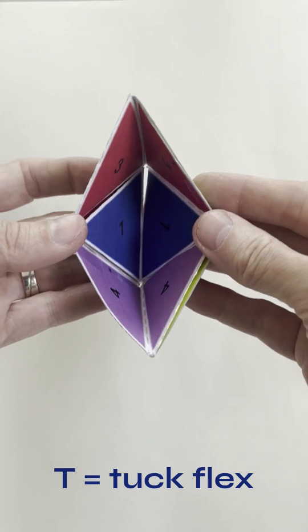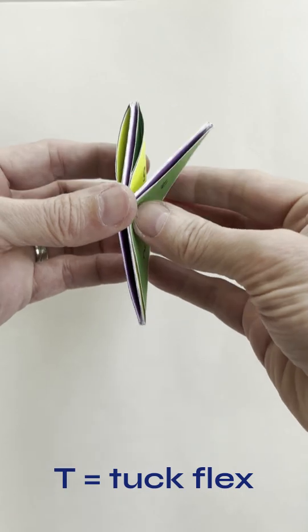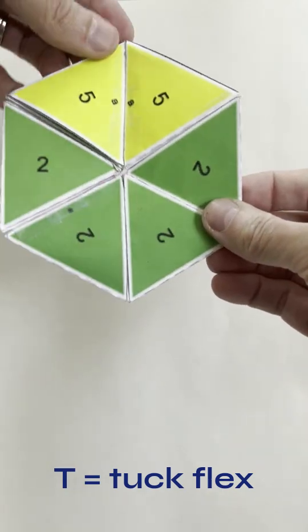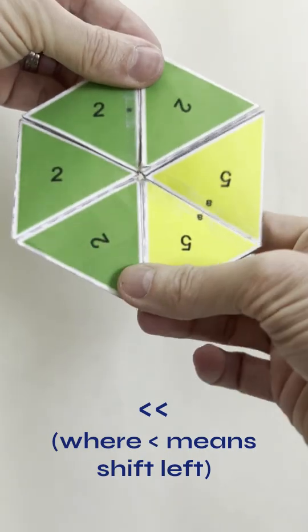Next, tuck the top corner into the center, bringing the left and right sides together, then open it back up. You've now done a tuck flex with a new reference hinge at top. Now shift two hinges to the left and do a second tuck flex.